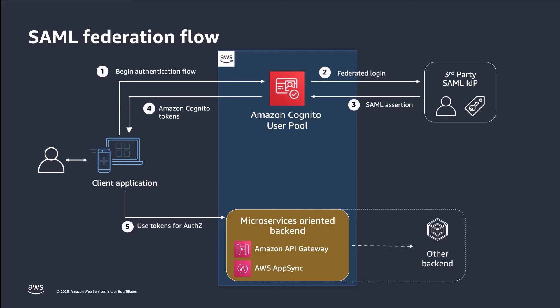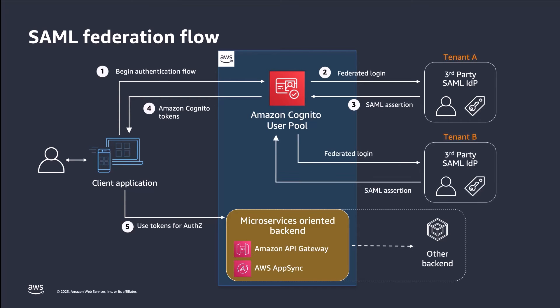As an example, the serverless architecture displayed here is using a microservices backend to protect access to data. This could be something like an Amazon API Gateway using a Cognito authorizer, or AWS AppSync using the issued access token to protect the GraphQL API endpoint. If this was a business-to-business use case, you would be able to integrate additional third-party SAML IDPs which could represent distinct tenants. This allows you to scale your SaaS solution using the Amazon Cognito user pool as an authentication abstraction layer, and therefore your application or suite of applications only has to integrate with your Cognito user pool.